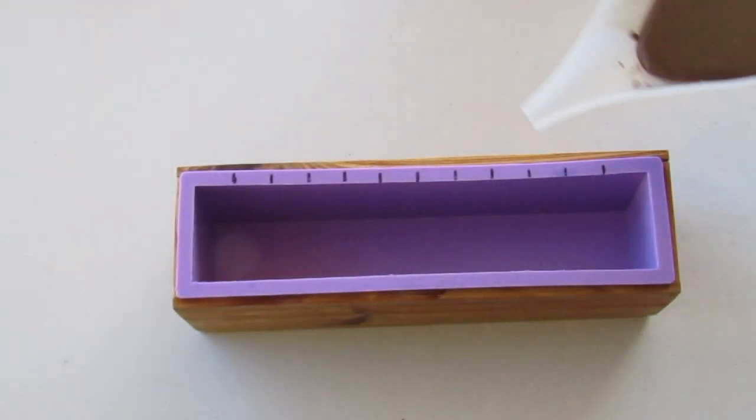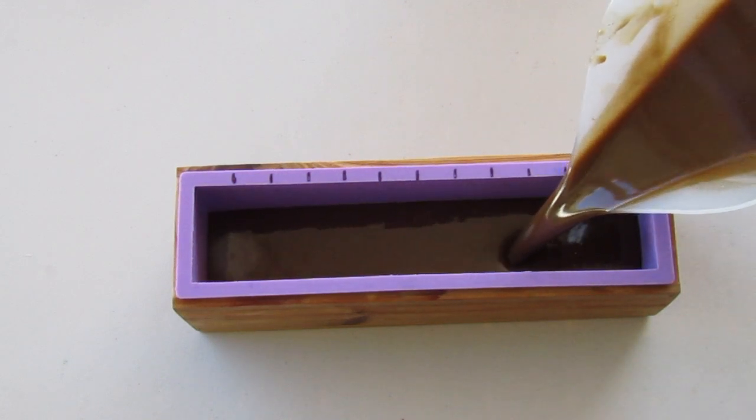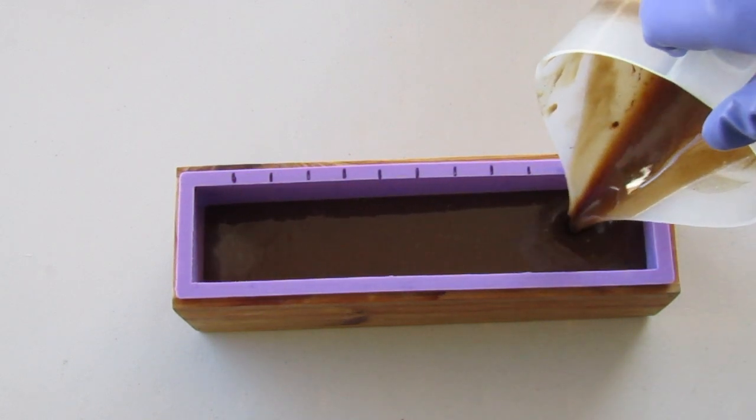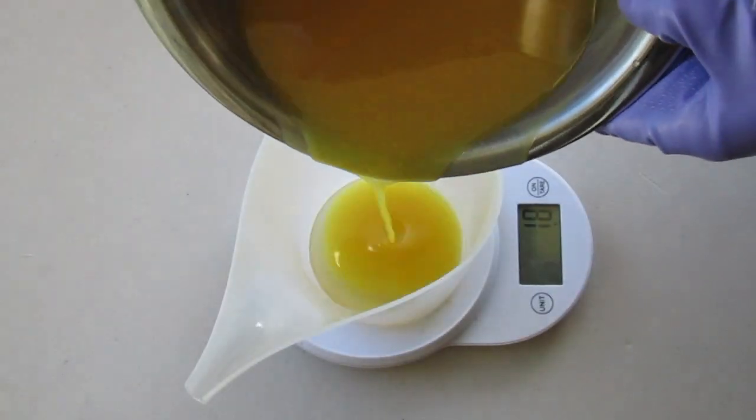The mould was marked along the cutting lines to help me line up the embeds and even though I'd been sparing with a stick blender the batter had still reached light trace by the end of the pour. It was still fluid enough to give a fairly flat surface.